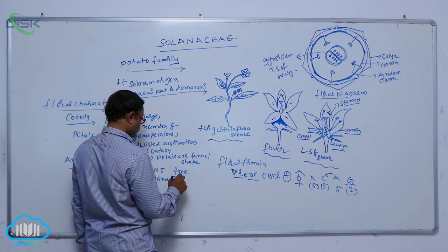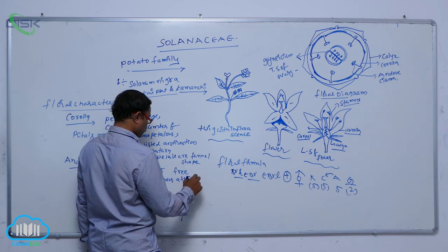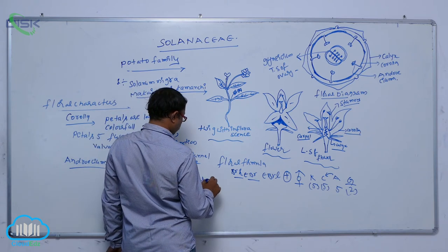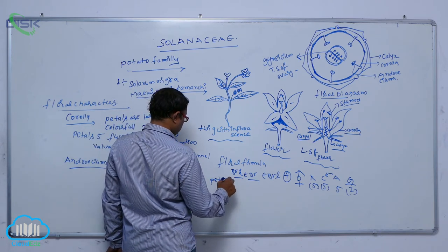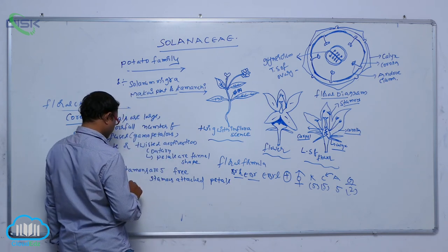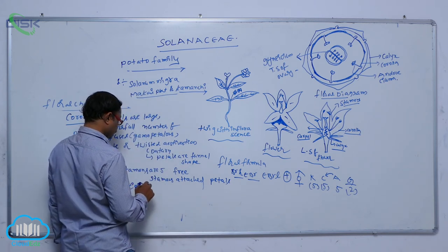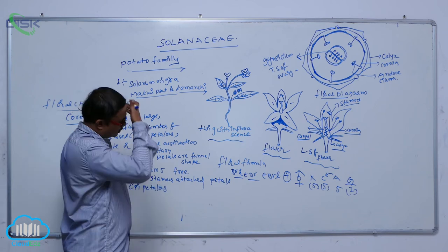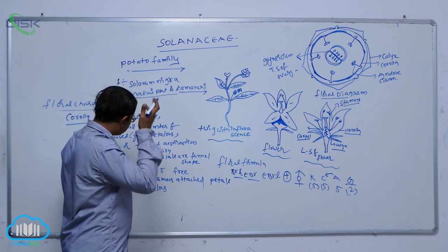When stamens are attached to petals, this is known as the epipetalous condition. The stamens are alternate to the petals.